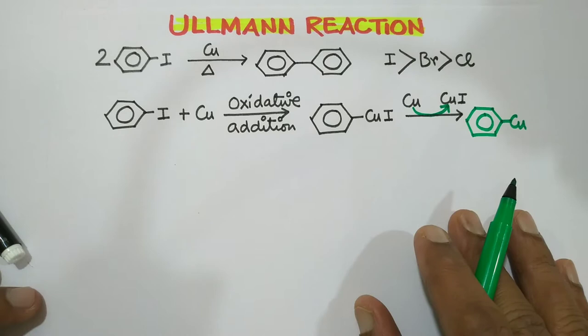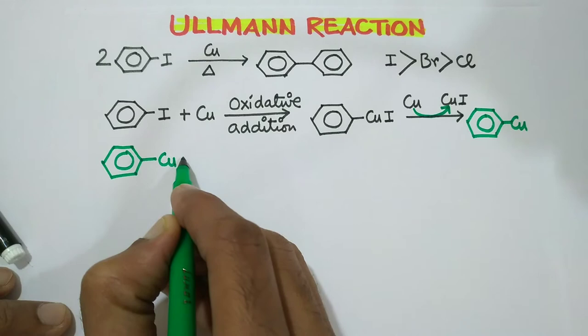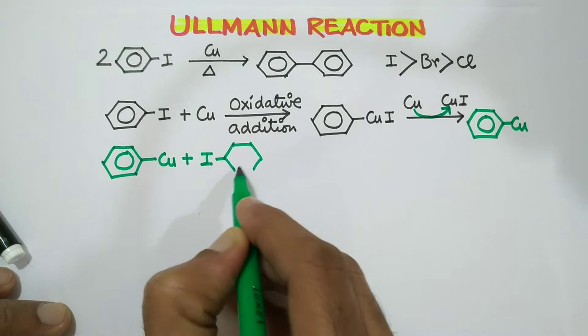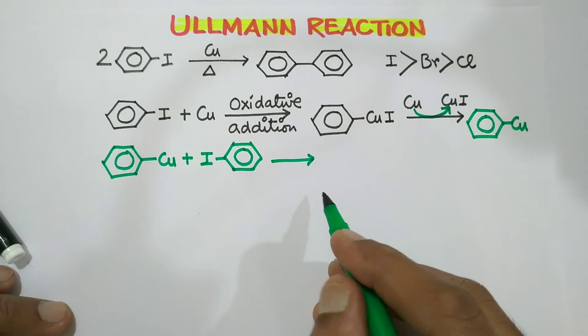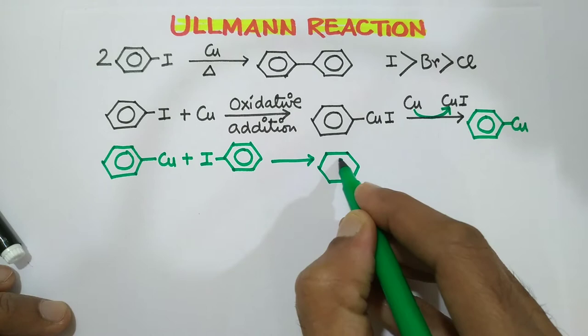Now organo-copper compound couples with again another molecule of iodide, aryl iodide. Again in oxidative addition to give the next intermediate like this.